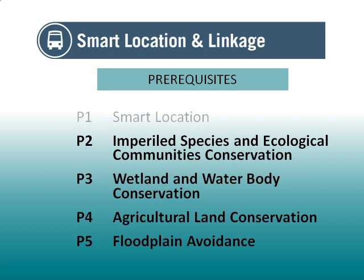LEED ND does allow development on sites with these land types, provided that they are protected and not disturbed. In some cases, surrounding buffers are also required, as well as permanent conservation easements. However, some disturbance of a portion of these sensitive land areas may be allowed in certain instances if mitigated according to prescribed requirements within the LEED ND rating system. All four of these sensitive land types can be found throughout the country and may be present in urban, suburban, or rural areas without distinction.